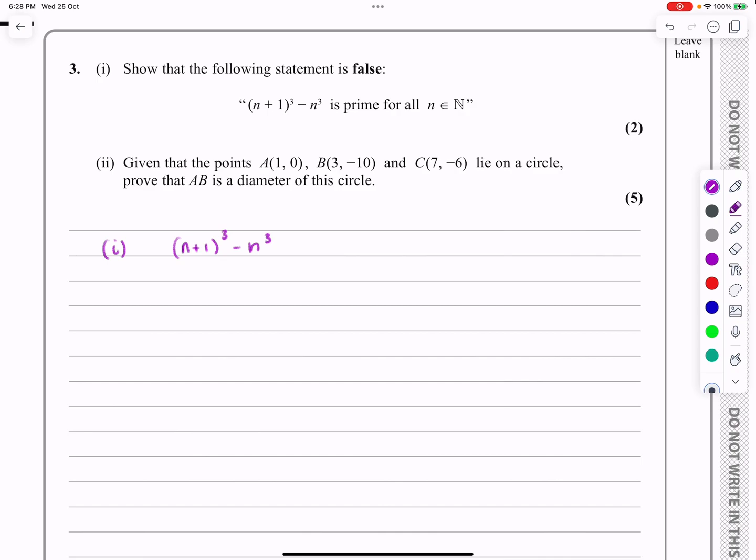Start off with n=1. n=1 would lead to 2³ - 1³, which is obviously 8 - 1 = 7. So that is prime. Let's try n=2. That would then give me 3³ - 2³, which would be 27 - 8. And that's 19, which is still prime.